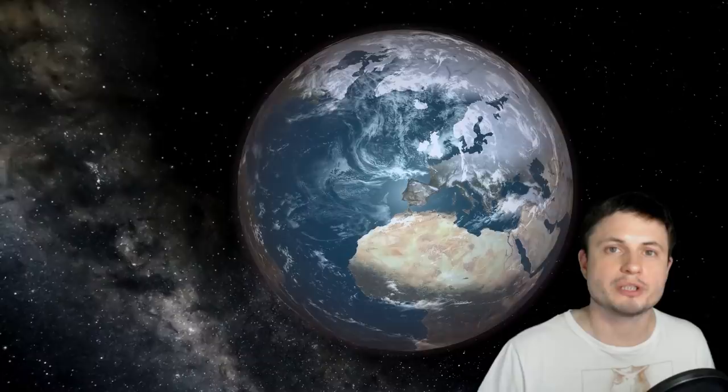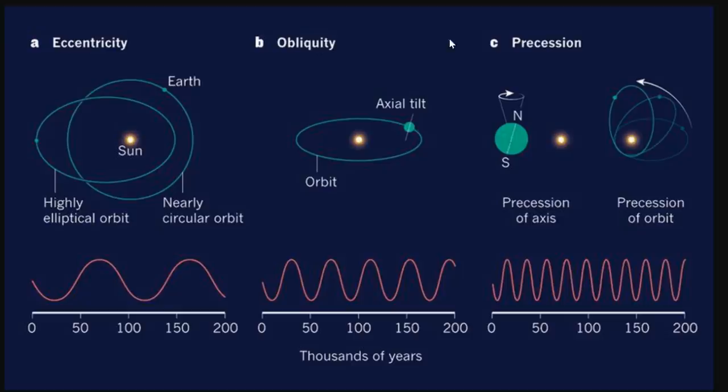Now to try to understand why they're asking this question we really need to investigate what happens to our planet Earth over the period of several thousand years. Now there's something known as Milankovitch cycles which refer to various climatic cycles that our planet goes through based on the eccentricity changes, the obliquity or the axial changes and the precession changes.